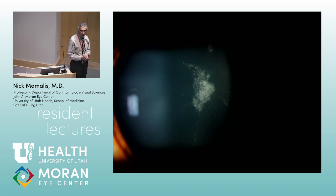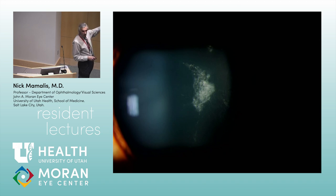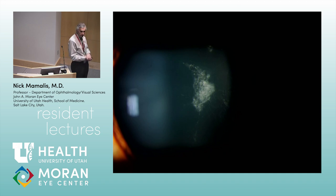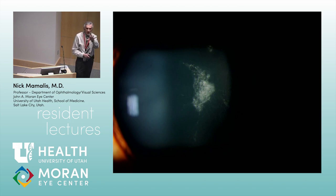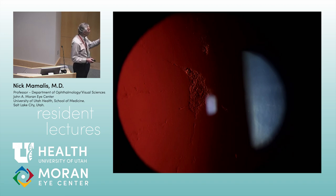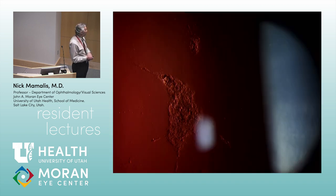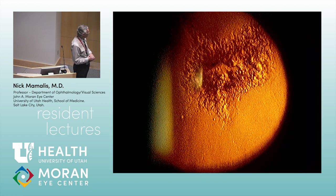This slit lamp photo shows a posterior opacity — this is a PSC, or posterior subcapsular cataract. These tend to be more in the center, sometimes round, sometimes irregular, and look almost like fish eggs or a ground glass appearance. They show up well in retroillumination. There's a close-up showing the ground glass or salmon egg look. Retroillumination is a good way to look at PSC cataracts.